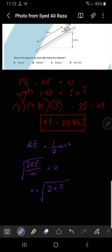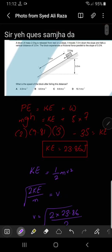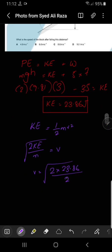2 times 23.86 divided by 2 - the 2s will cancel - so velocity becomes the square root of 23.86, and the answer is 4.88 meters per second.